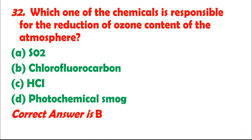Question 32: Which one of the chemicals is responsible for the reduction of ozone content of the atmosphere? A. SO2. B. Chlorofluorocarbon. C. HCl. D. Photochemical smog. Correct answer is B.